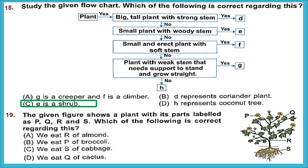Question 19: A plant's parts are labeled P, Q, R, and S. Option A says we eat R of almond — but R is the stem, while almond is an edible seed, so incorrect. Option B says we eat P of broccoli — P is a flower and broccoli is also a flower — so this is correct. We eat P of broccoli is the right answer.